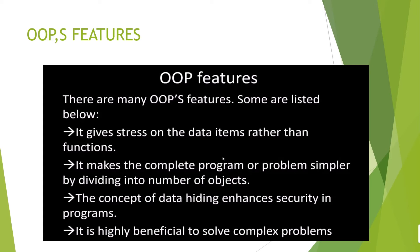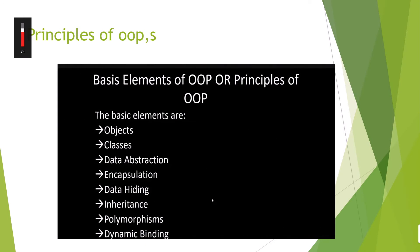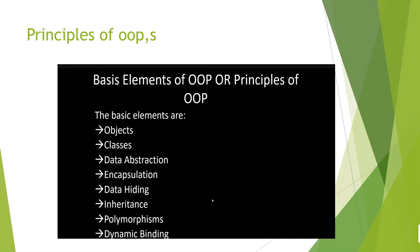OOP is highly beneficial for solving complex problems because it divides the complete program into a number of smaller objects. The basic elements or principles of OOP include: object, classes, data abstraction, data hiding, inheritance, polymorphism, and dynamic binding. I hope you understand what OOP is — I will further explain what is object, what is class, and the basic principles. Thanks for watching.